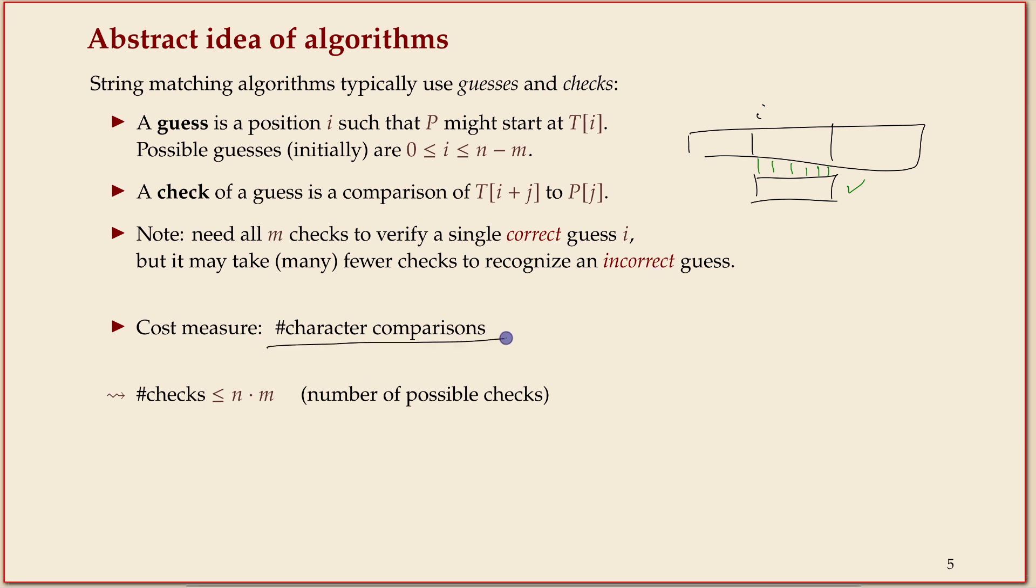What will count is the number of character comparisons, so exactly the number of checks. If you do additional comparisons between the patterns, we'll also count those. The number of checks is at most n times m, just because if you did a comparison before, you remember it and don't do it again.